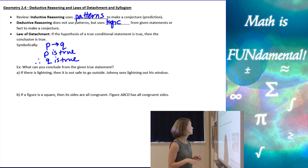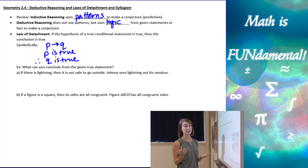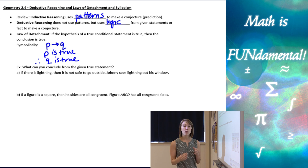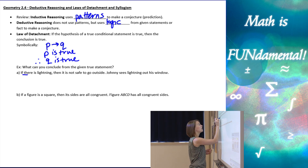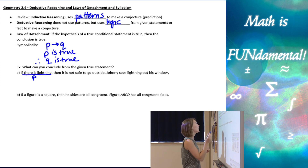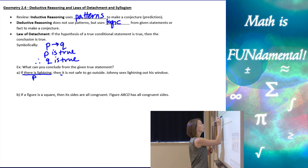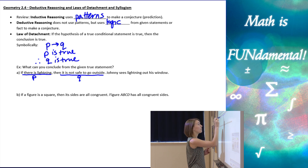Let's look at a couple of examples. The first one says: if there is lightning, then it is not safe to go outside. Johnny sees lightning out his window. We want to break that first conditional statement into the hypothesis and the conclusion. The hypothesis is 'there is lightning,' so we put P underneath that. The conclusion is 'it is not safe to go outside,' so that would be Q.